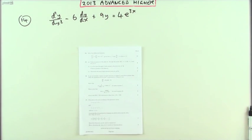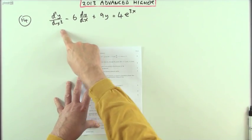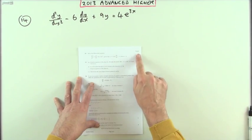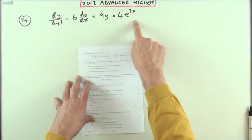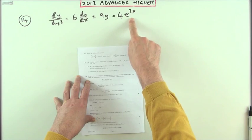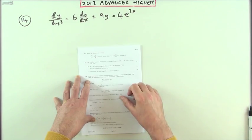Number 14 from the 2013 Advanced Higher Maths, a second-order differential equation, 11 marks. There's an exponential term at the end, which isn't too bad - they're quite easy to differentiate.